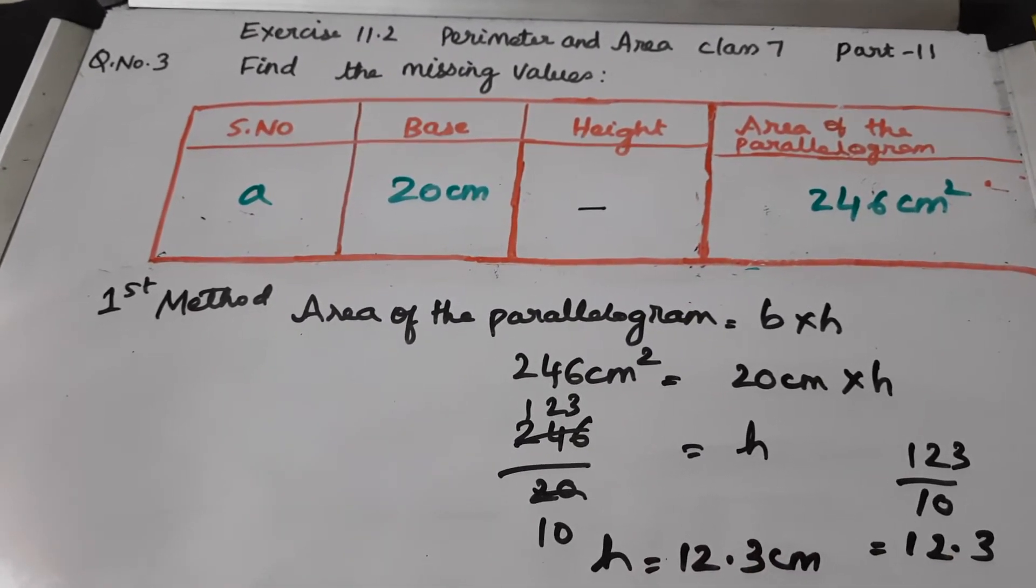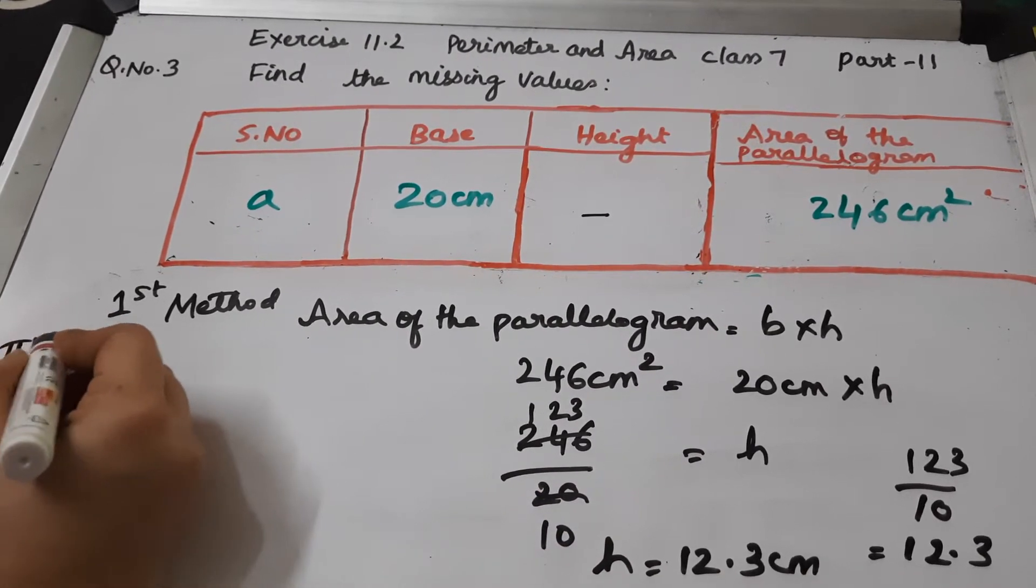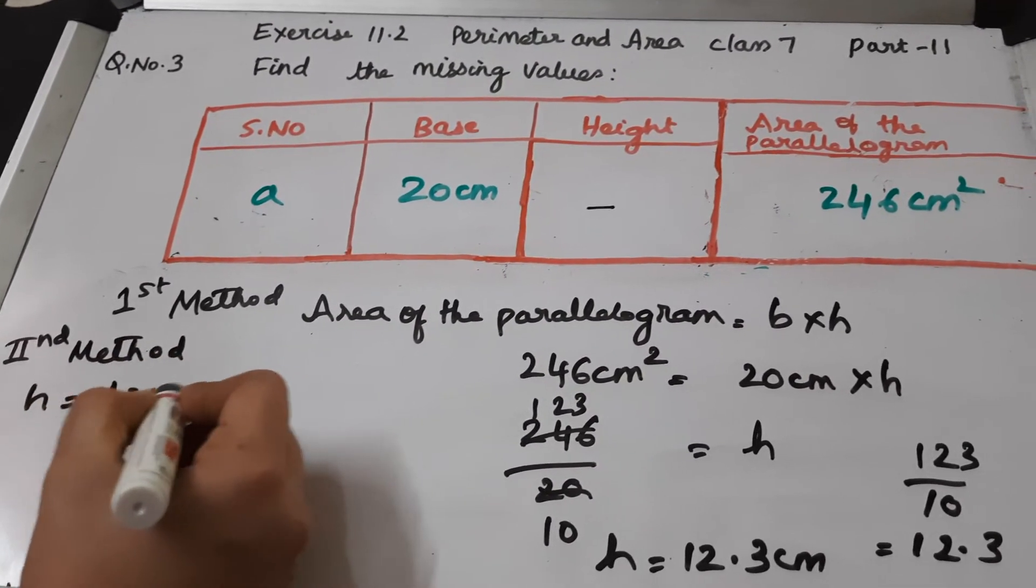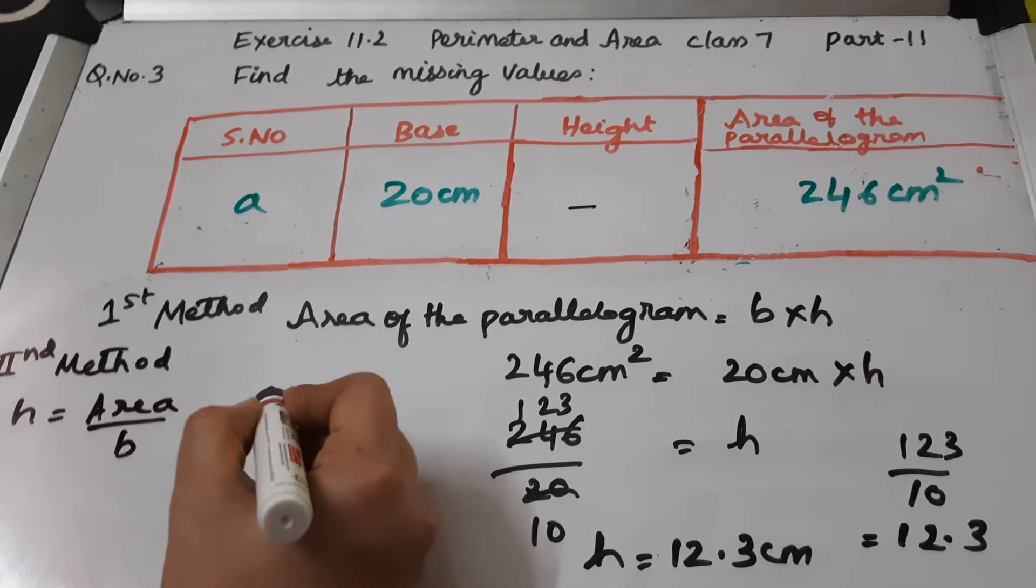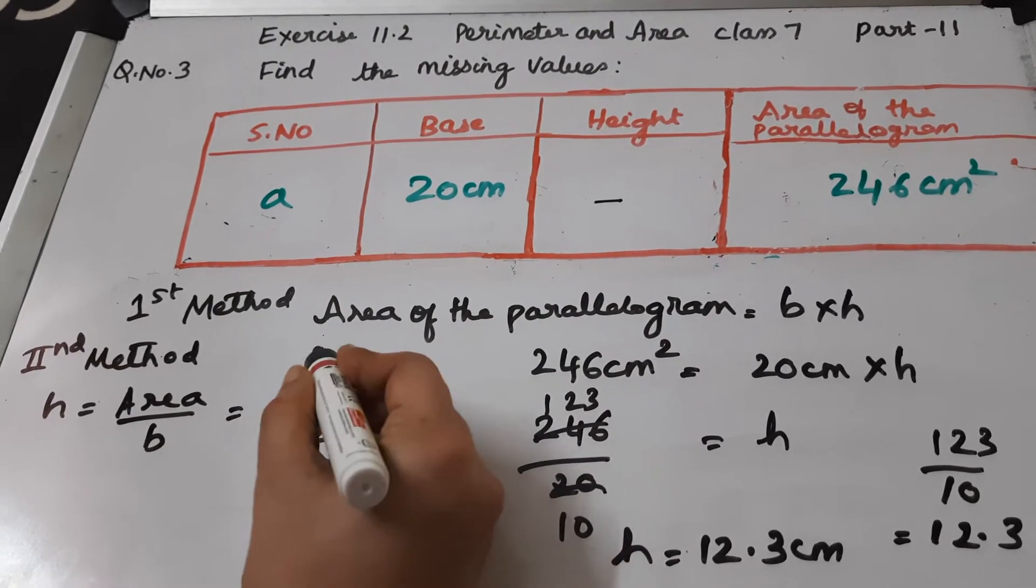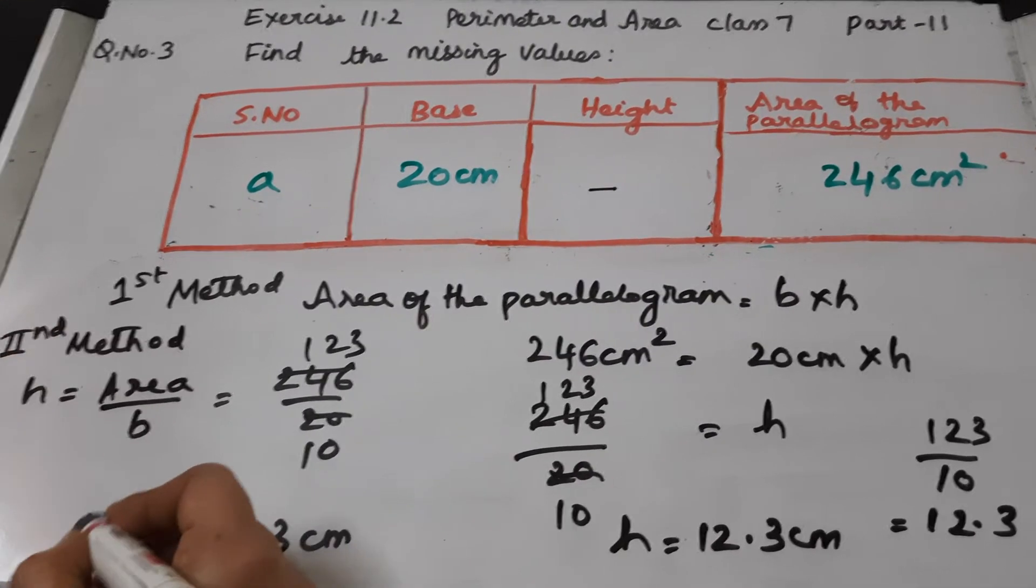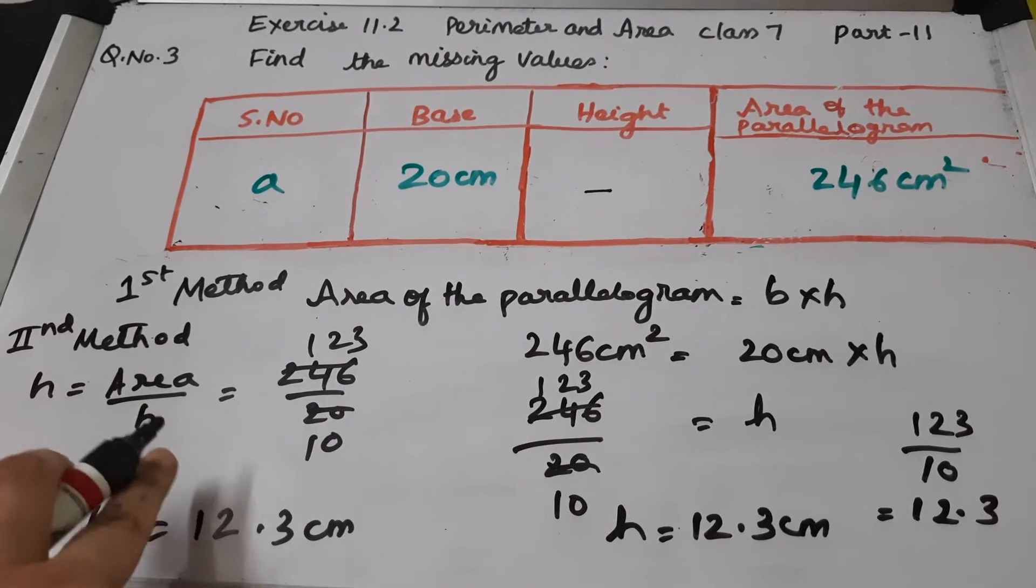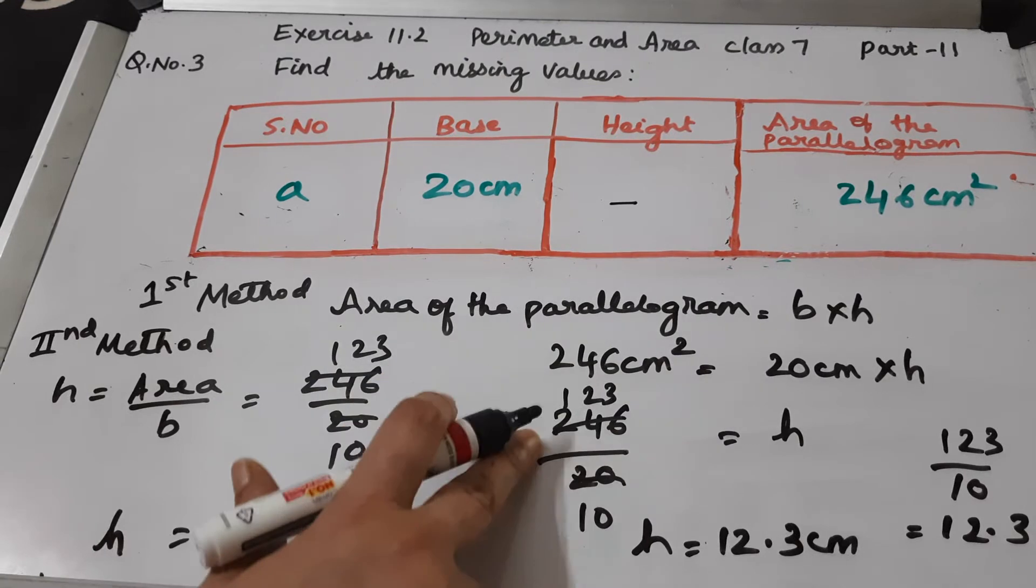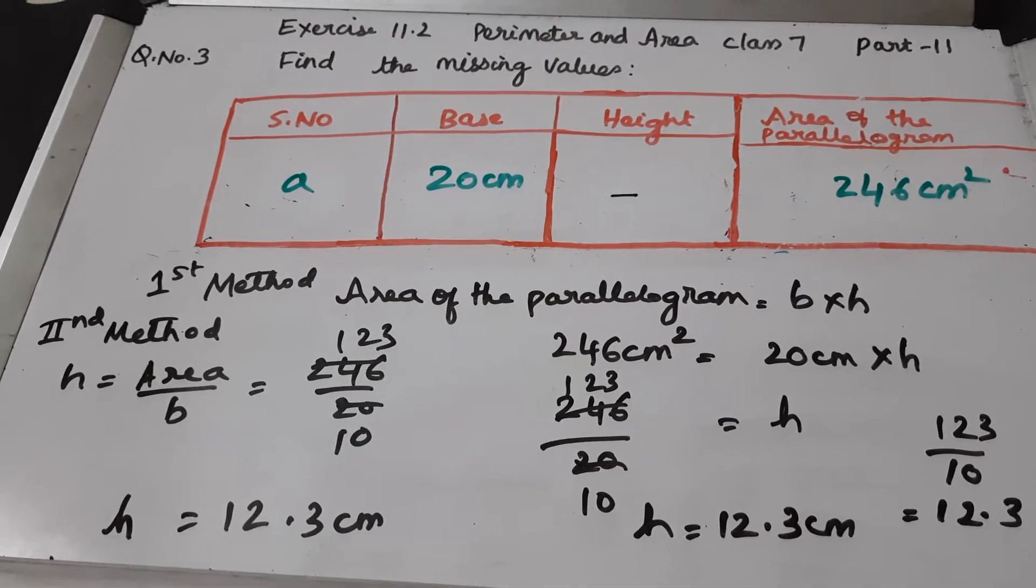And one more thing, you can get the same answer by using the second method, wherein directly you can write height equals area by base. Area is 246 by 20. Again simplification, the same simplification which we did here. You can either use this method or this method, whatever you find easy. But this tells you the logic. This method tells you the logic behind the usage of this formula. I hope you understood this.